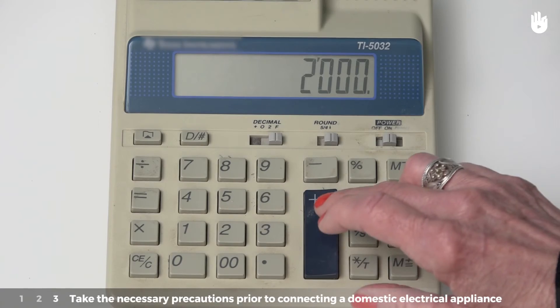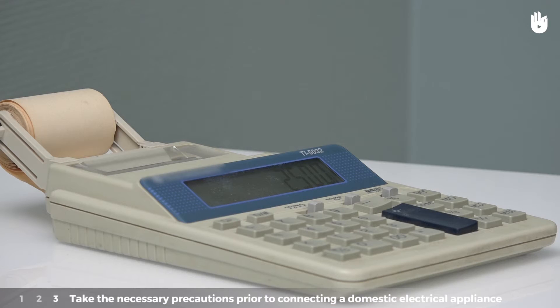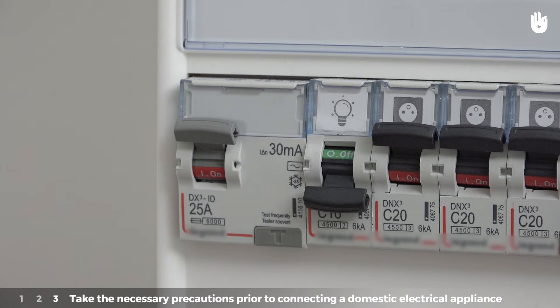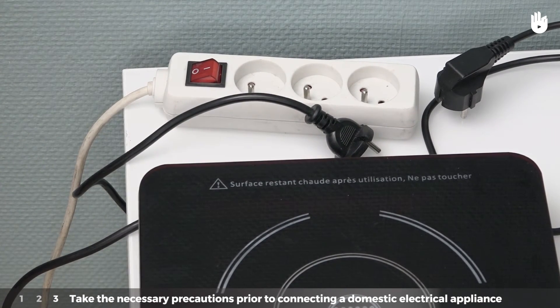For example, to connect a 2,000 watt electrical stovetop to an installation that already has a 500 watt coffee maker, you need 2,500 watts. The installation's wattage must therefore be greater than 2,500 volt amperes or 2.5 kilovolt amperes. If your installation is 6 kilovolt amperes, the circuit breaker will not be triggered.